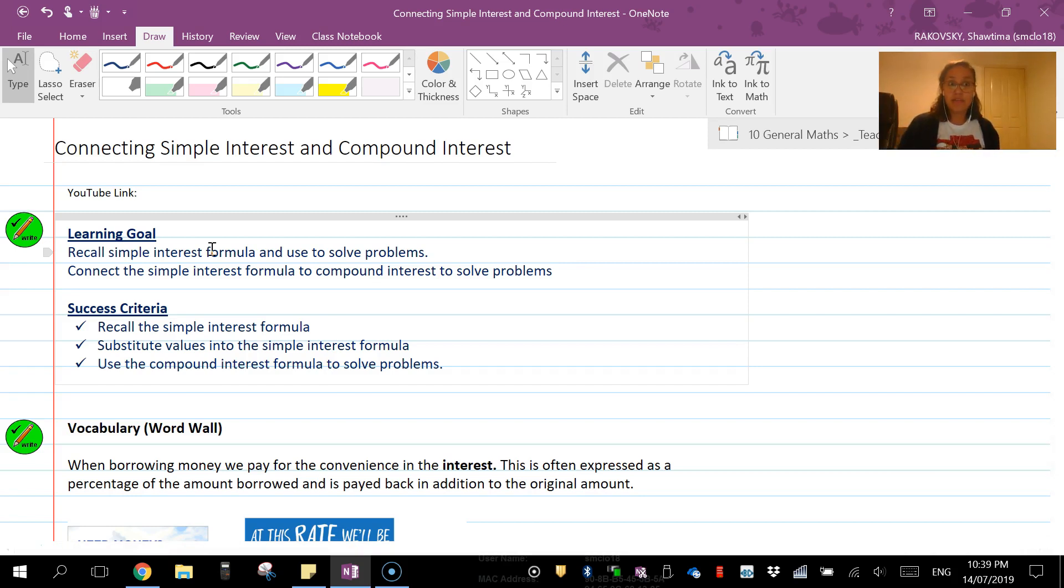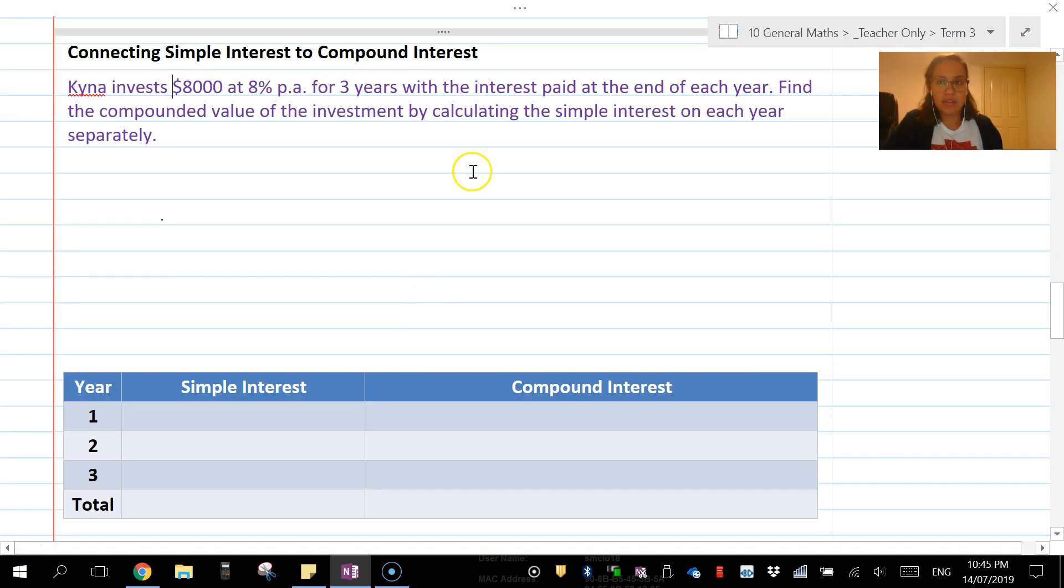How you can make your life easier by using the compound interest formula. Kyra invests $8,000 at 8% p.a. for 3 years with the interest paid at the end of each year. This bit of information is important to us because we're only working out each year.